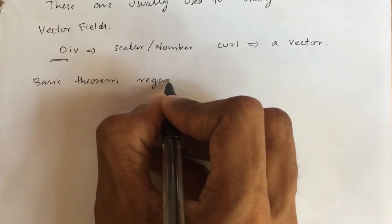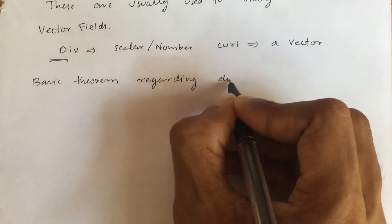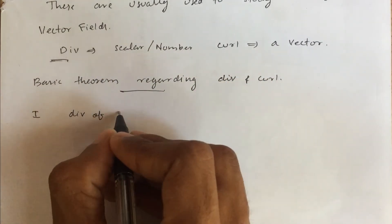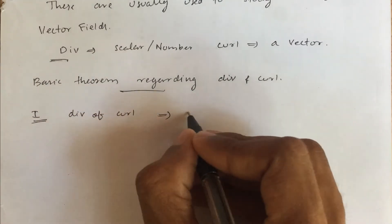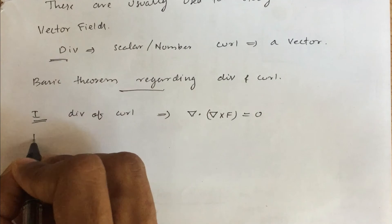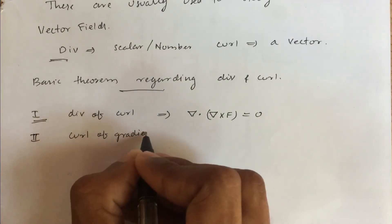Basic theorems regarding divergence and curls. One, divergence of a curl is zero. And two, curl of a gradient is zero.